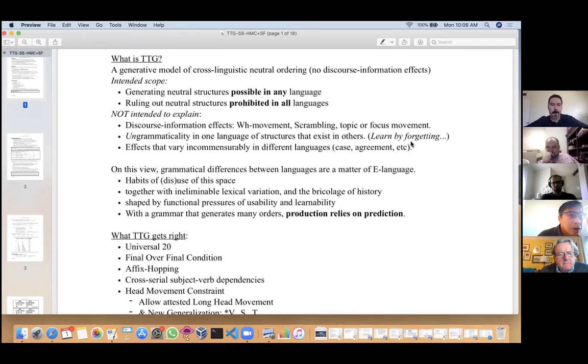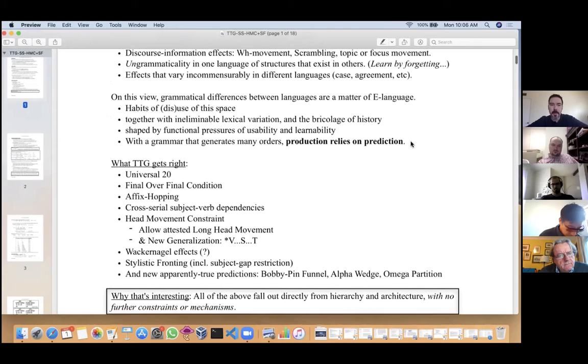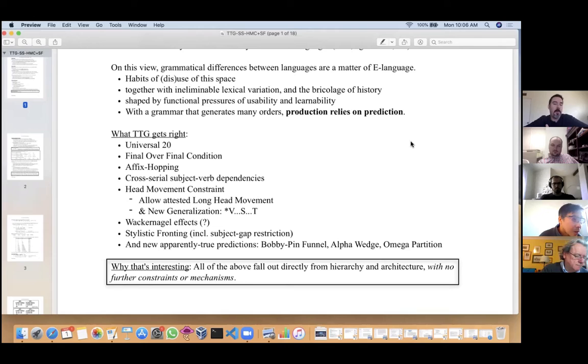In this theory, the differences between the grammars of different languages are really a matter of E-language—habits of use and disuse of the larger space of possibilities that generative grammar makes available. There's a certain arbitrariness, lexical variation, the Norman invasion, important functional pressures of having to use it every day and having to learn it as a child.